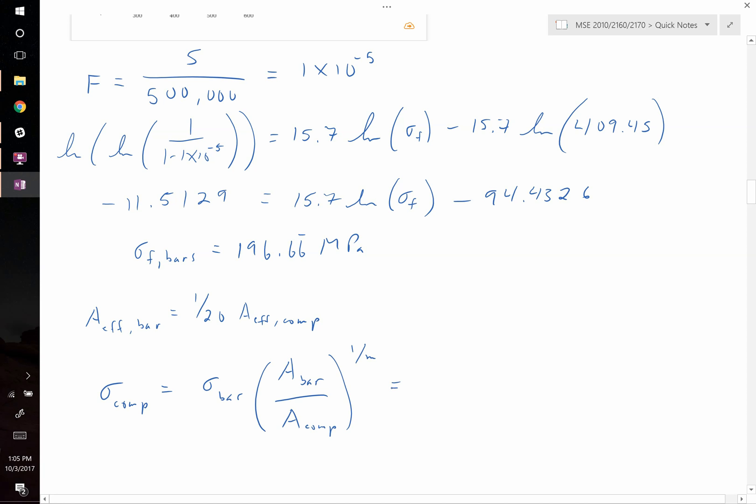Or in other words, is equal to 196.66 repeating, the area of the bar, and then 20 times the area of the bar raised to the 1 over 15.7, and this is equal to 162.5 megapascals.